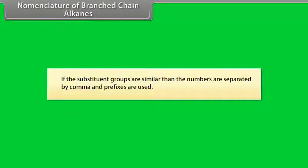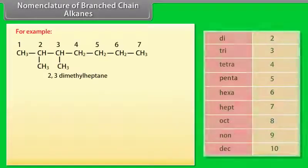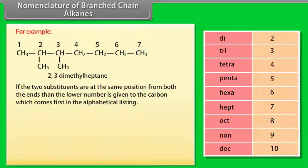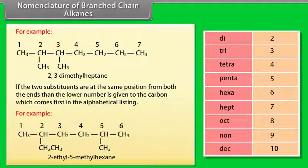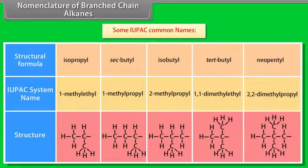Nomenclature of branched-chain alkanes continued. If the substituent groups are similar, the numbers are separated by commas and appropriate prefixes are used. If two substituents are at the same position from both ends, the lower number is given to the carbon that comes first in alphabetical order. For example, 2-ethyl-5-methylhexane.